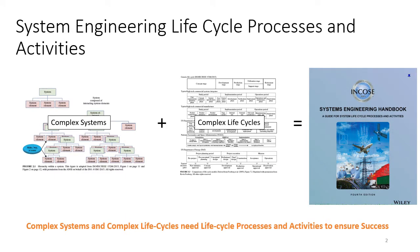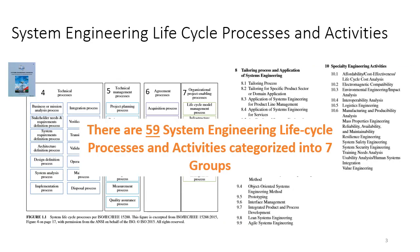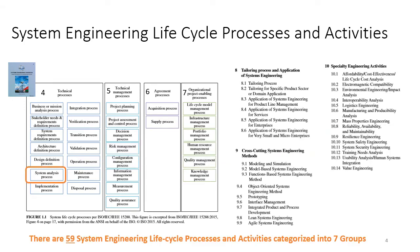The system engineering handbook developed by INCOSI has a list of system lifecycle processes and activities. These are structured approaches to manage the development of very complex systems in complex life cycles. The handbook has identified 59 system engineering lifecycle processes and activities, categorized into seven groups. The topic of this video is the system analysis process, which is in the technical processes in chapter 4.